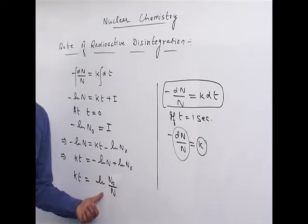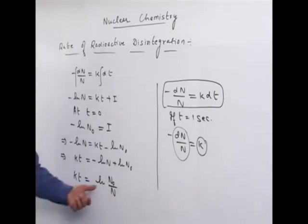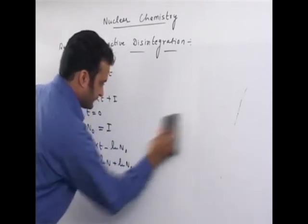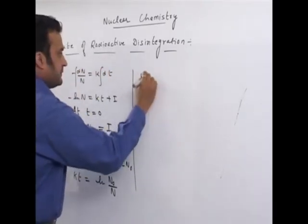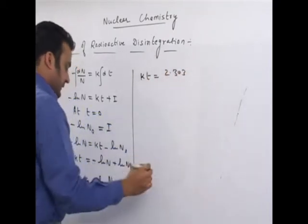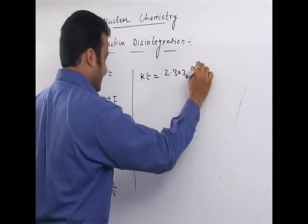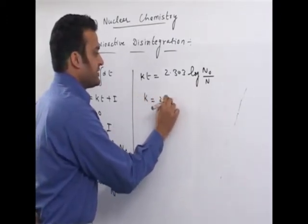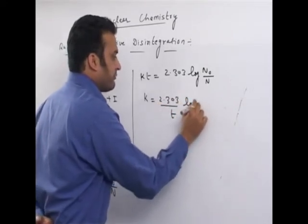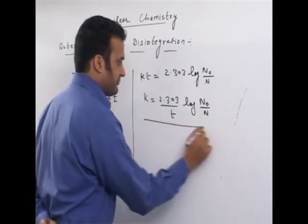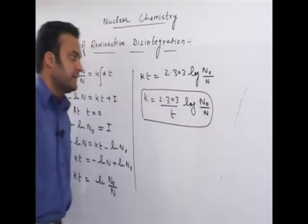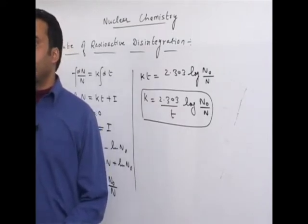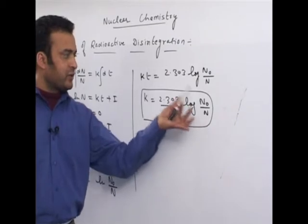This is a natural log. To convert to log base 10, multiply by 2.303. So kt equals 2.303 log of N naught upon N, or k equals 2.303 upon t times log of N naught upon N. This equation is the same as first-order kinetics and must be applied in nuclear chemistry for disintegration problems.